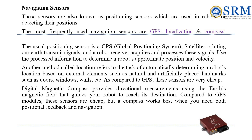Navigation sensors help the robot know where it is. Common ones are GPS, localization, and compass sensors. GPS uses signals from orbiting satellites to determine approximate location and speed. Localization involves a robot determining its position by recognizing landmarks like doors, windows, or walls — it is less expensive than GPS. A digital magnetic compass uses the Earth's magnetic field to guide the robot; it is cheaper than GPS and works well for both knowing the robot's position and guiding it to a destination.